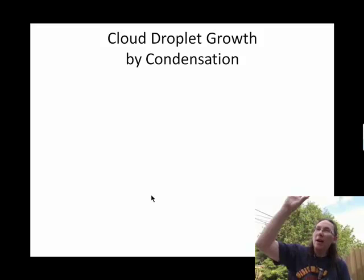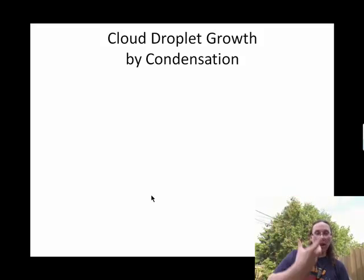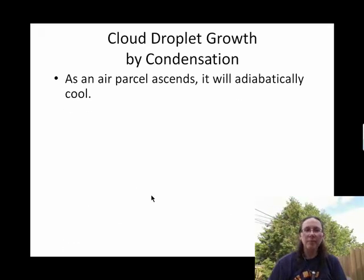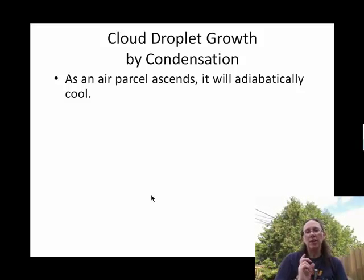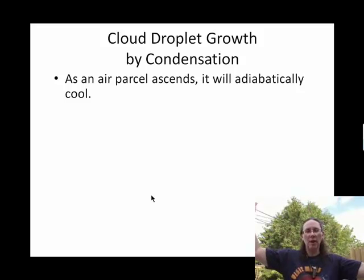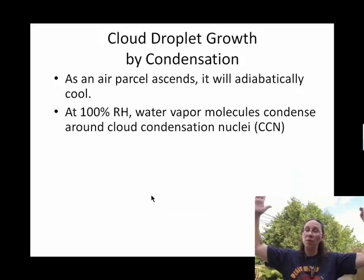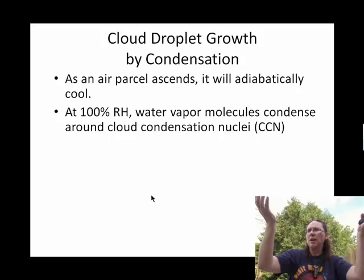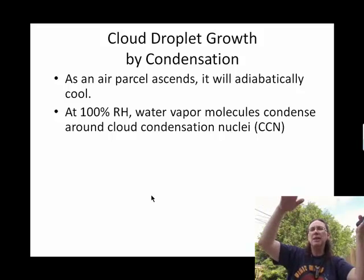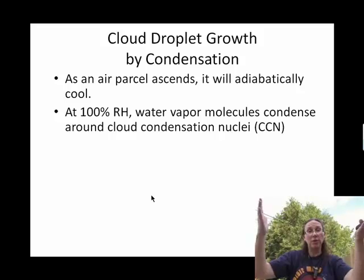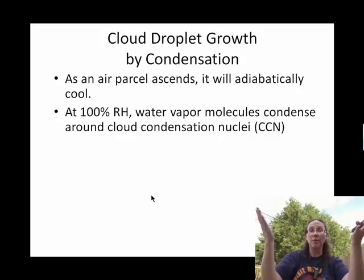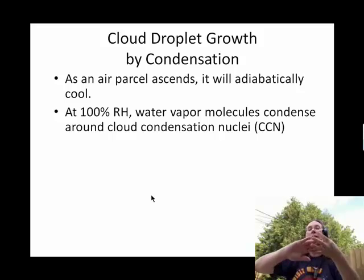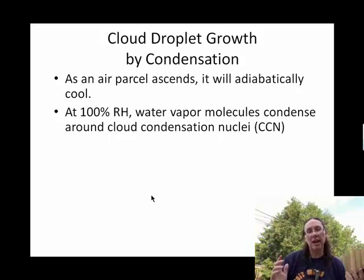We'll be talking more about the formation of cloud droplets that ultimately lead to rain droplets. One of the things we learned in Chapter 4 was that if you can get a chunk of air ascending, it will expand, and as it expands it will cool. As an isolated chunk of air cools down, its percent relative humidity gets higher and higher. At some point it's going to reach the dew point temperature and you're going to have condensation occur.